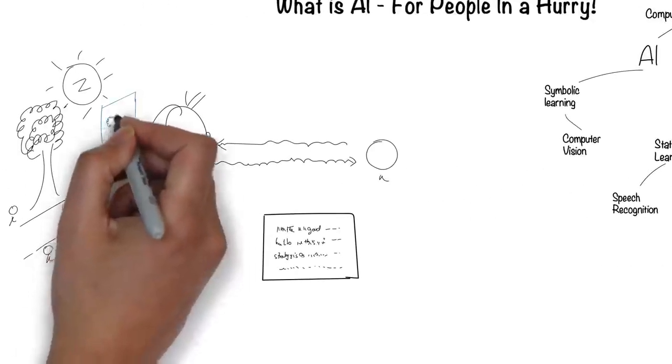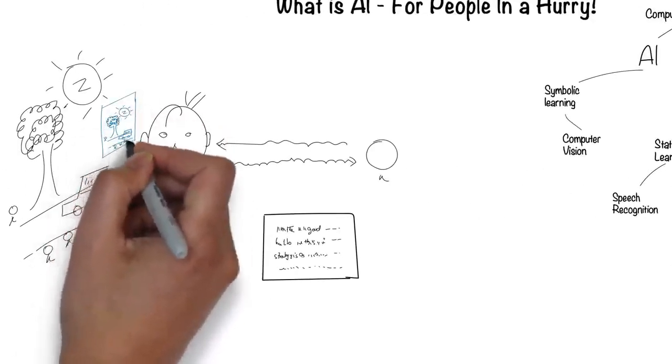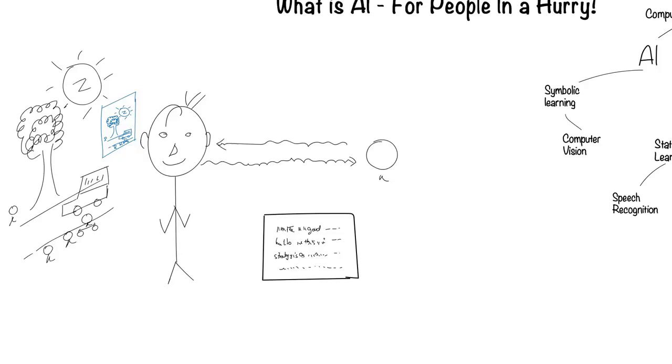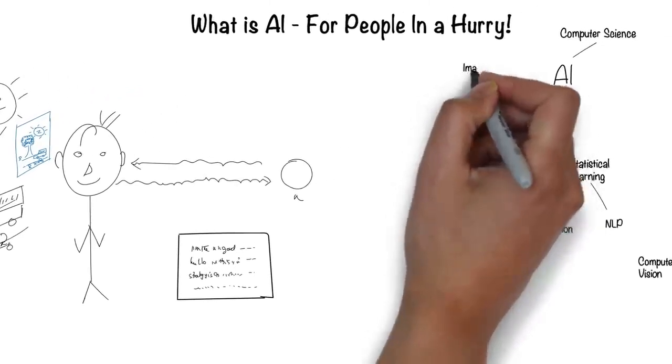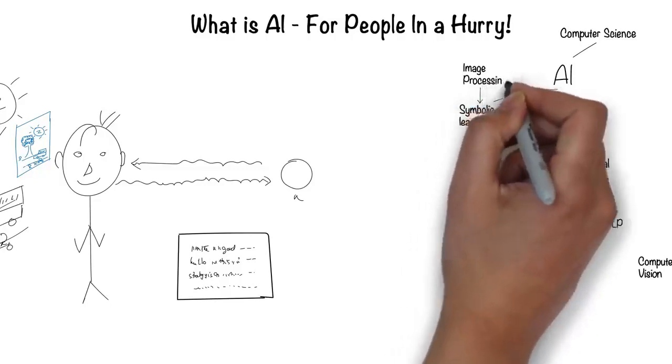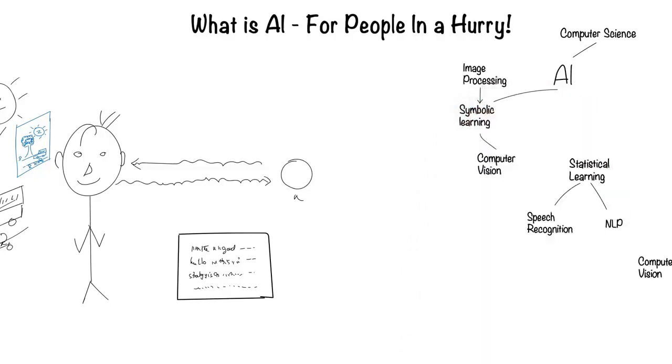Humans recognize the scene around them through their eyes, which create images of that world. This is the field of image processing, which even though is not directly related to AI, is required for computer vision.